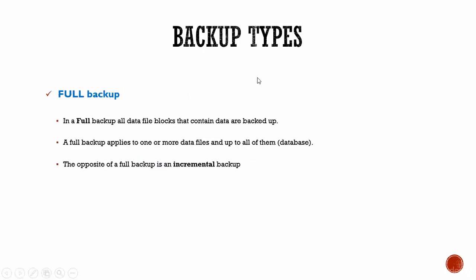Now let's talk about full backup. In a full backup, all the data file blocks that contain the data are backed up. You can select one data file or all data files present in the database — it copies all the data file blocks that contain the data. A full backup is the opposite of an incremental backup. In an incremental backup, it backs up only the data file blocks which were changed since the last backup, whereas a full backup takes the backup of all data file blocks that contain the data.